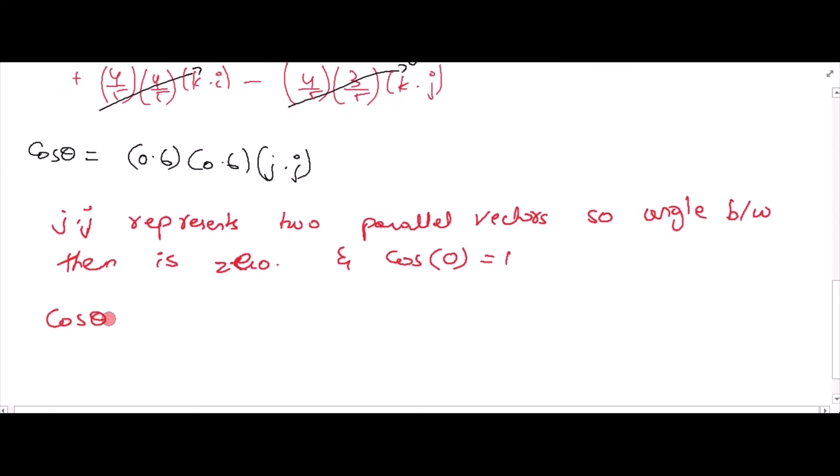So, cos theta is equal to 0.6 into 0.6 and theta is equal to 68.89 degrees. This is the answer to this problem.